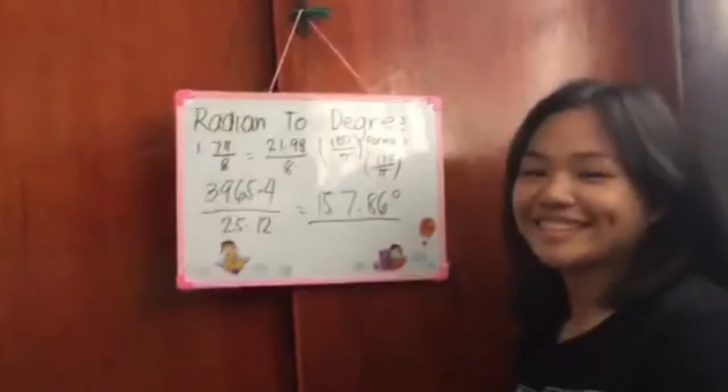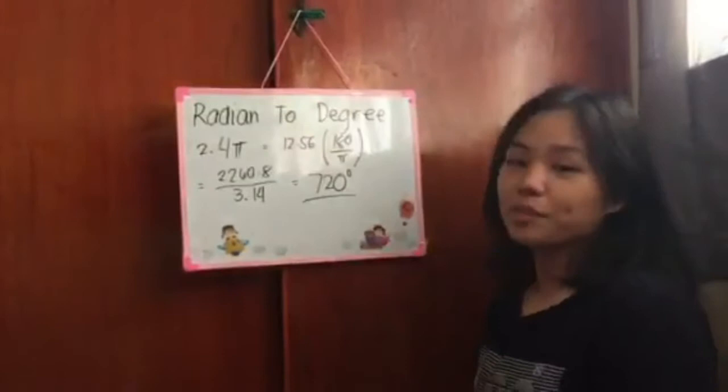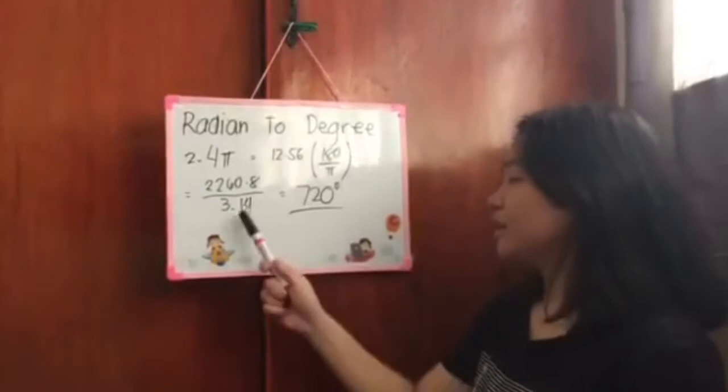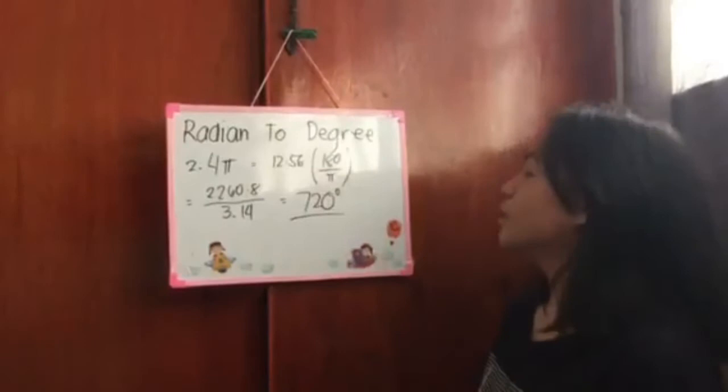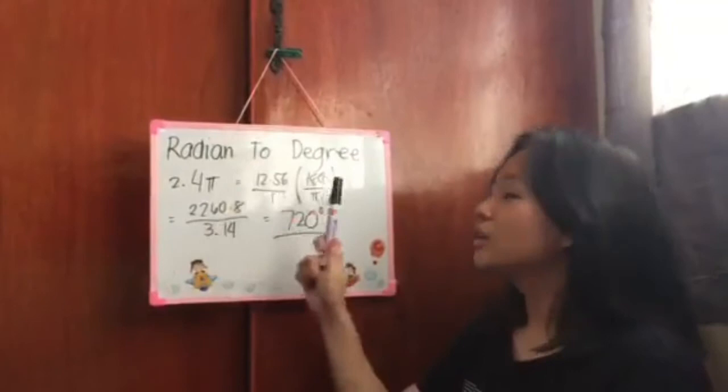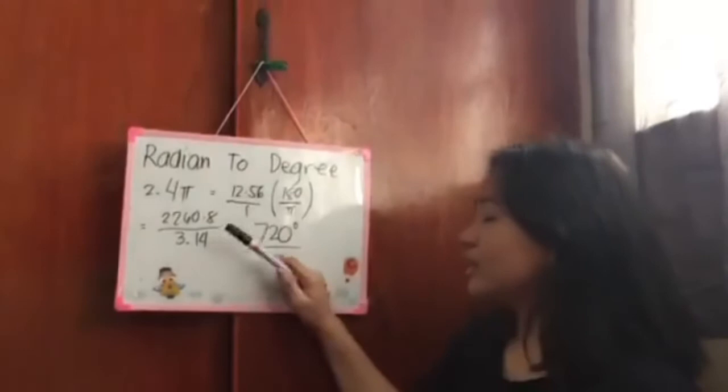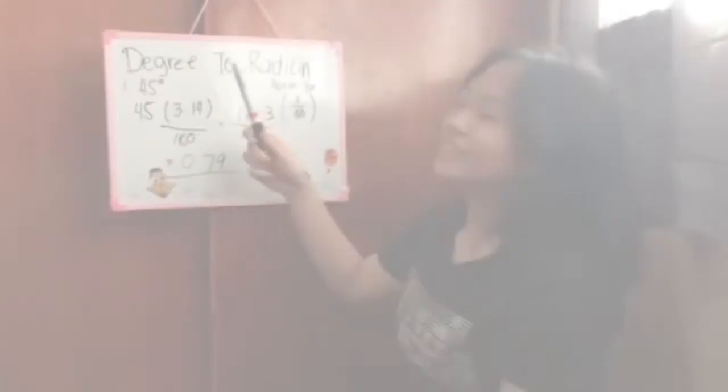Example number 2 is 4 pi. The 4, multiply it first by pi which is 3.14. The result is 12.56. There's an imaginary 1 there. 12.56 times 180 equals 2,260.8. Then copy the pi, because when you multiply by 1 the result is the same. Then 2,260.8 divided by 3.14, this is the result, which is 720 degrees.